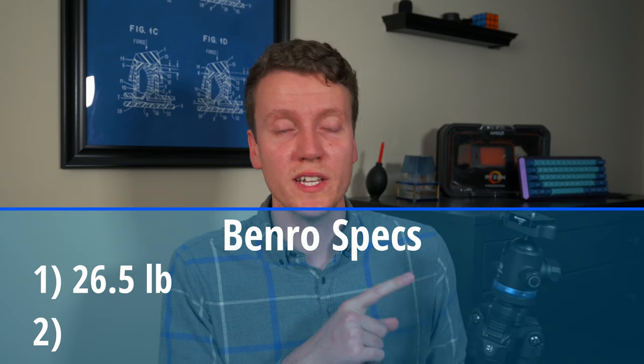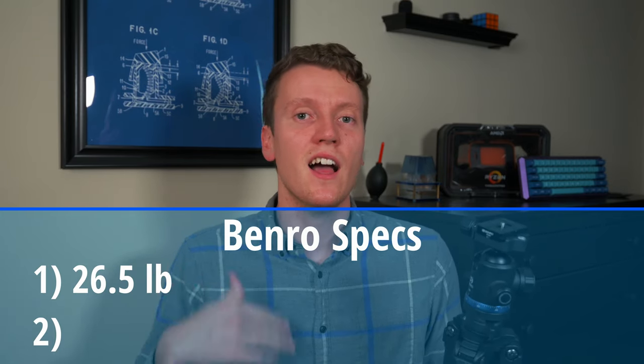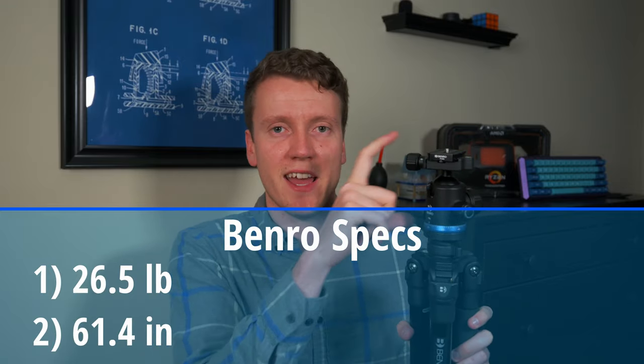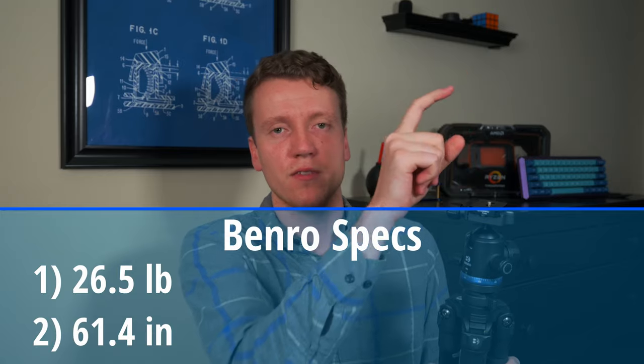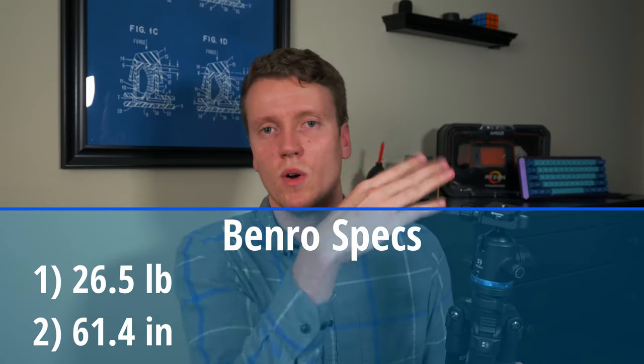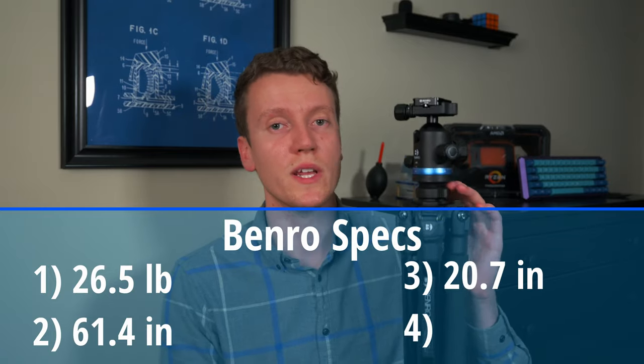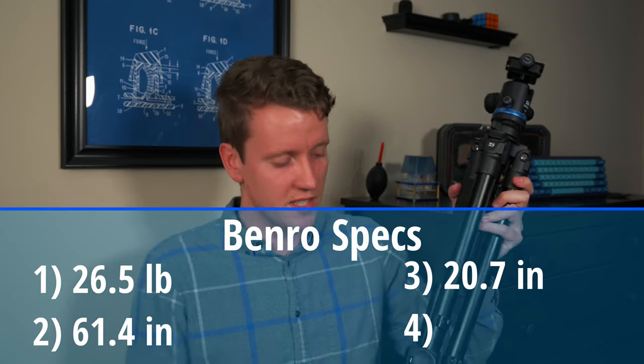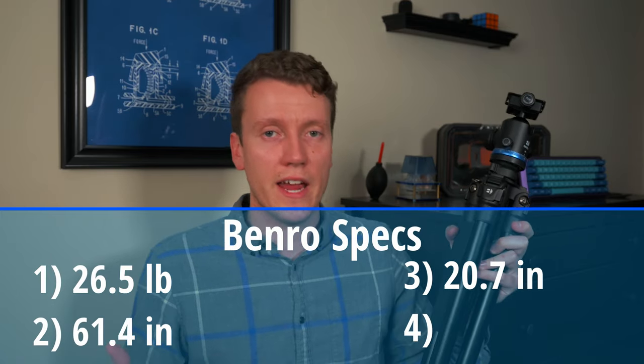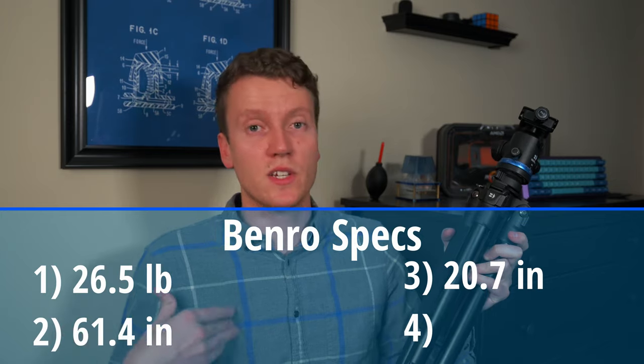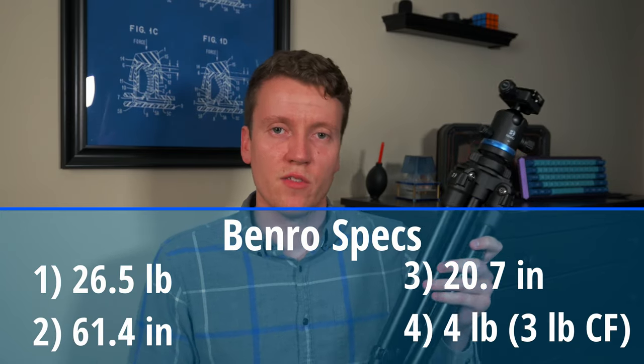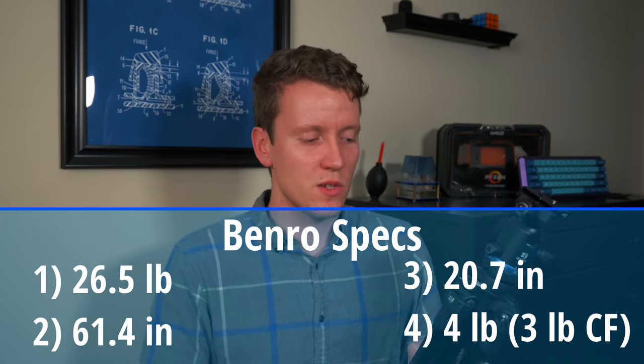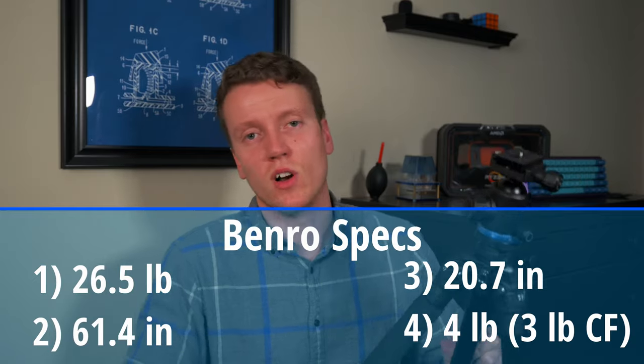It can hold up to 26.5 pounds with a max height of 61.4 inches. That's with the center column extended without the head. So if you put a head on here, plus your camera, your viewfinder is going to be well above 61.4 inches. Its folded length is only 20.7 inches. That's not super small for some travel tripods, but it's somewhere in the middle. It's decently small. It can fit inside of airport carry on. So that was good enough for me. And with weight, it weighs in right around four pounds with the carbon fiber version being only three pounds. So you'll save an extra pound of weight, but it will cost you a little bit more.